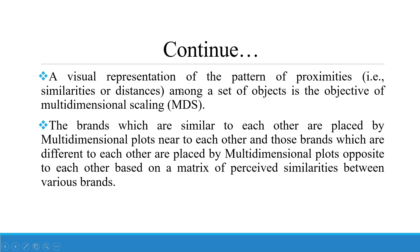A visual representation of the pattern of proximities — that is, similarities or distances among a set of objects — is the objective of multi-dimensional scaling. Brands which are similar to each other are placed near to each other in multi-dimensional plots, and those which are different are placed opposite to each other, based on a matrix of perceived similarities between the various brands.